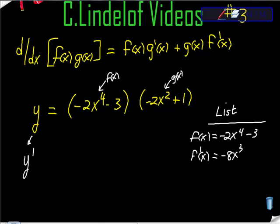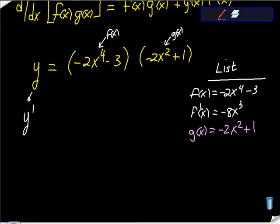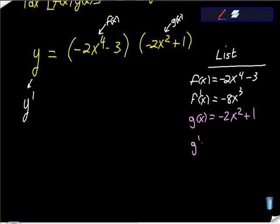Then we need our g of x. So let's take this as our g of x. So let's say, okay, g of x is equal to negative 2x squared plus 1. The first derivative of that would be g prime at x, wouldn't it? So g prime at x. 2 times negative 2 is negative 4. Remember, we're going to decrement, decrease this by 1. So x. So far, so good?